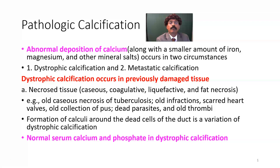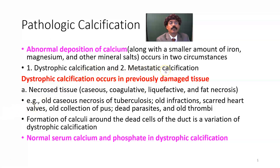Pathologic calcification is the abnormal deposition of calcium along with a small amount of iron, magnesium, and other mineral salts. It occurs in two types: one is dystrophic calcification, which occurs in previously damaged tissue, and the other is metastatic calcification, which is always associated with hypercalcemia.